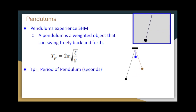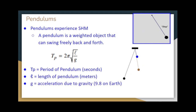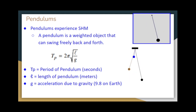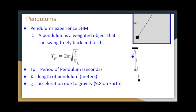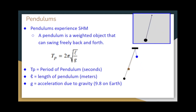T_p stands for the period of the pendulum, measured in seconds. L is the length of the pendulum, measured in meters. g is the acceleration due to gravity. It's important to note that gravity impacts the period of a pendulum — if we brought a pendulum to the moon, its period would be different than on Earth. Since g is in the denominator of our equation, a smaller g on the moon gives a bigger period. So the period of a pendulum on the moon would be longer than on Earth.